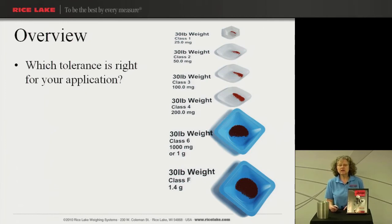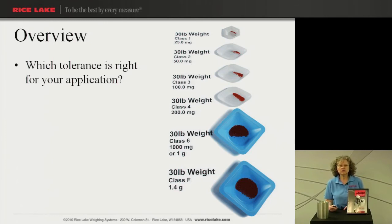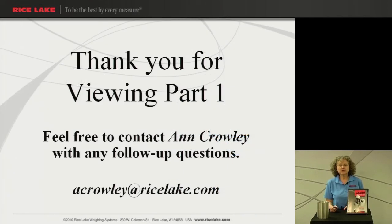What would be best for your application? You have to consider which tolerance or class is going to be best for you. Do you need OIML? Do you need ASTM? Or do you need NIST? What regulations govern you? Do you need to work for the federal government or the FDA? And what is the product that you're weighing — how accurate does the mix need to be? Are you using a hazardous chemical where tolerances need to be much tighter? Are you mixing paint where a little variation will physically change the color? Take all of this into consideration when picking the right tolerance. Thank you for viewing Part 1. My name is Ann Crowley, and I'll be happy to help you with any follow-up questions.